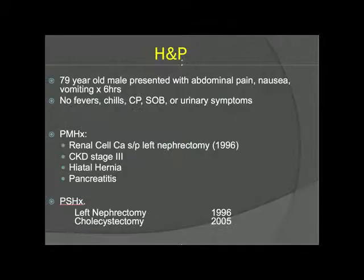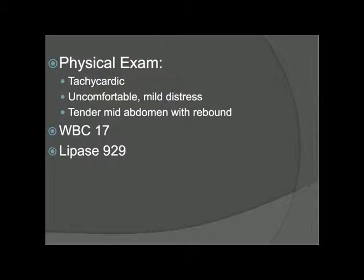A 79-year-old male with a history of an asymptomatic hiatal hernia presented with abdominal pain, nausea, and vomiting. On exam, the patient was tachycardic and tender with an elevated white count and lipase.